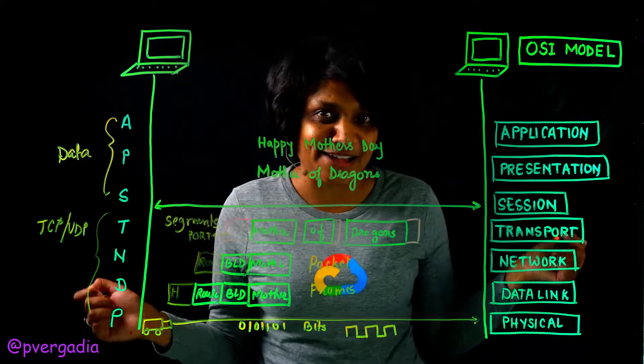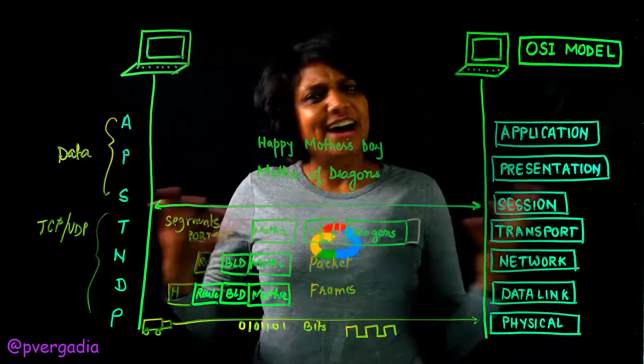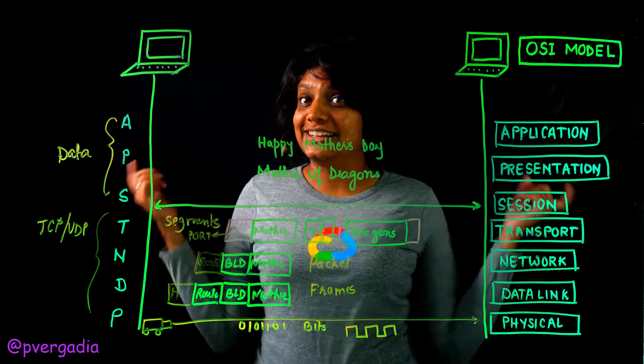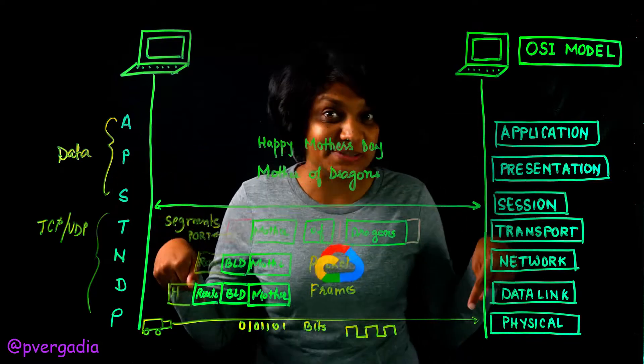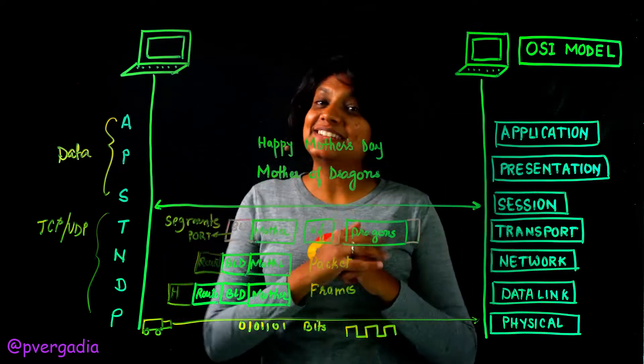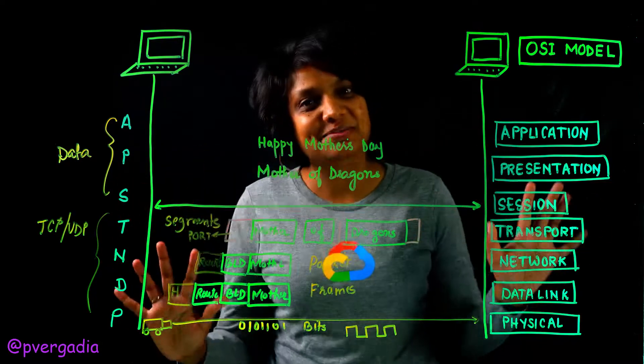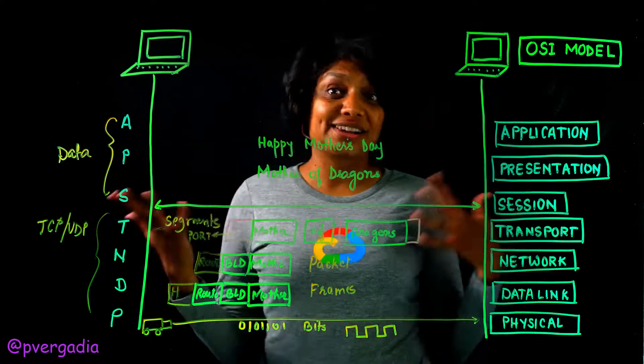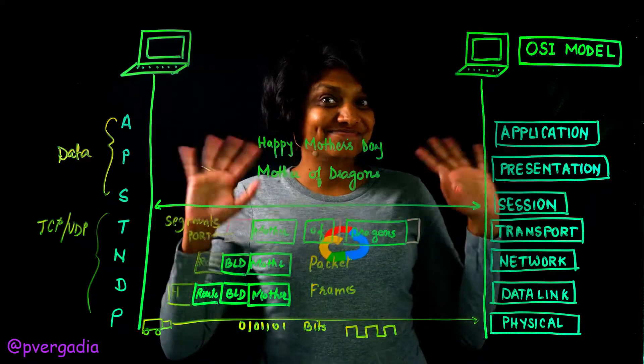That's pretty much how a packet transfers over the network from one computer to another using the OSI model. How did you like this explanation? Let me know in the comments below, and Happy Mother's Day to all the moms out there. Don't forget to subscribe for more cloud concepts!